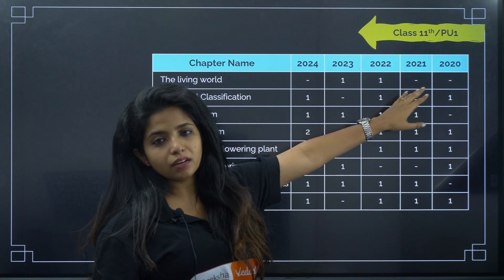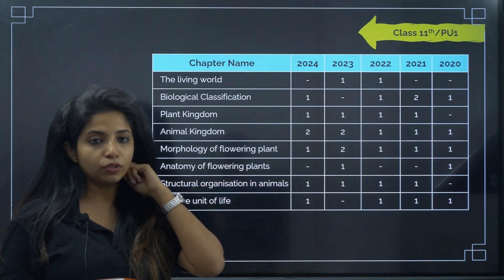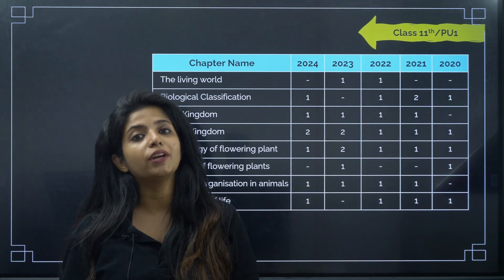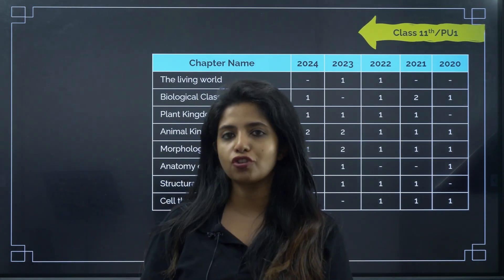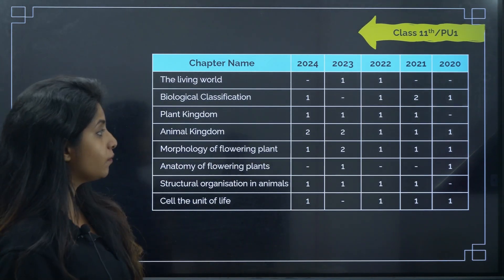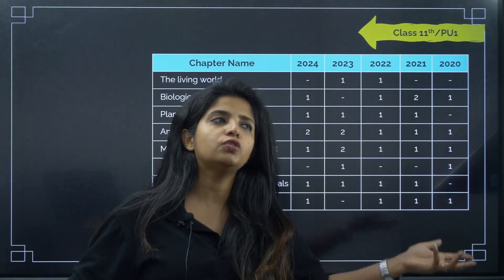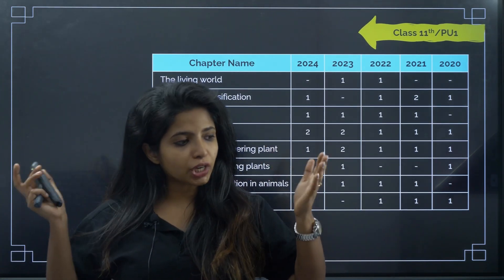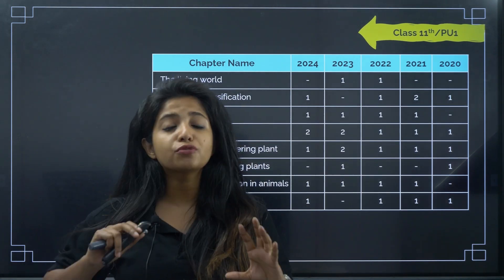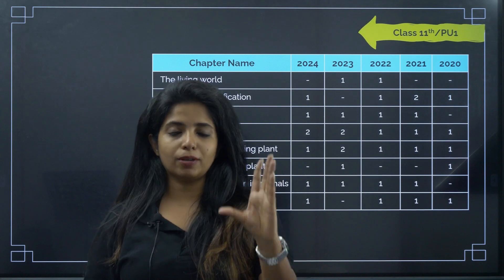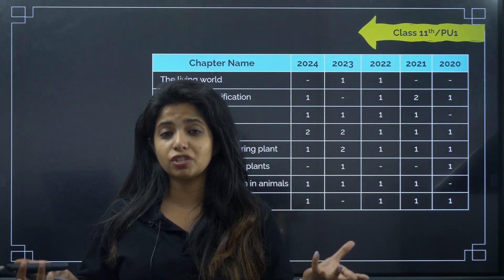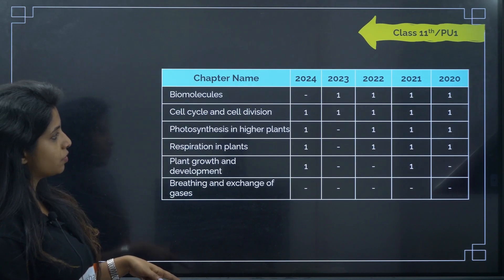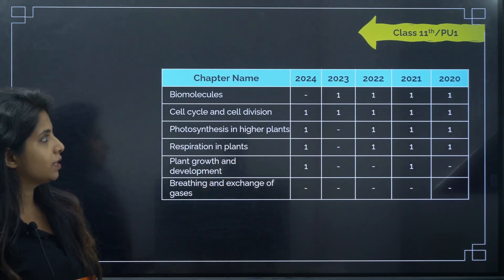For 11th grade chapters in KCET, 'The Living World' shows a pattern like: none, none, 1, 1, then none — trends are definitely changing. For KCET, most questions come from 12th grade, with the remaining from 11th, so your 12th should be very strong to crack KCET. That said, 11th grade is broad — if you study it well, your foundation becomes very easy going forward. It's a package full of knowledge. Please take screenshots of the weightage charts shown.